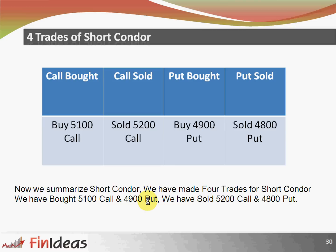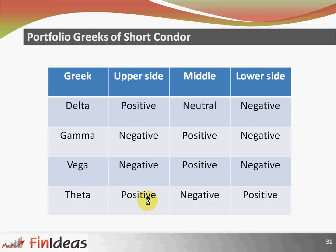To summarize the short condor: we have made four trades — we bought the 5100 call and 4900 put, and we sold the 5200 call and 4800 put.